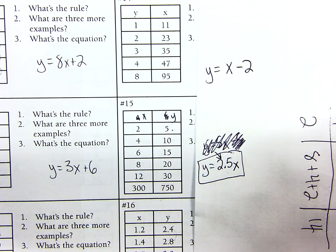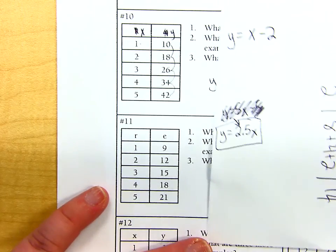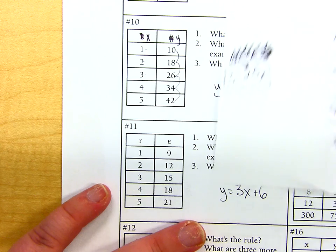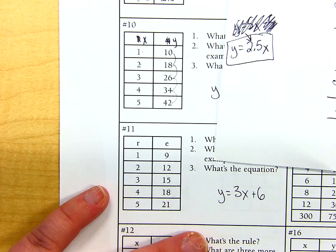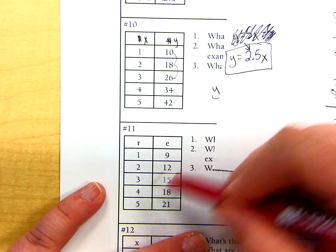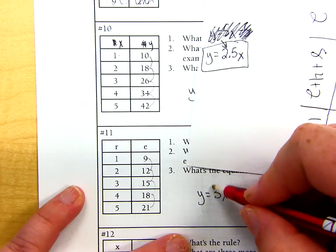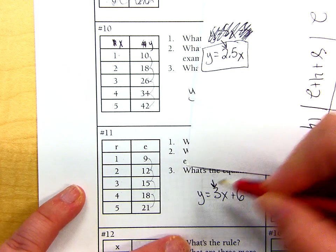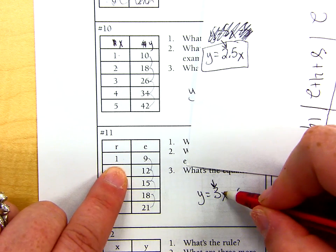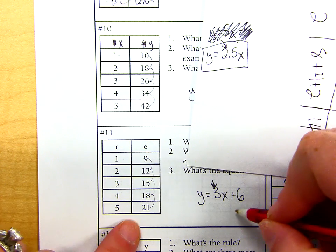We might as well go over the remaining ones. How about 11? Did you guys get 11? Did you get 3X plus 6? Yes. Okay, good. And this one's nice. It's going up by 1s. I notice I'm going up by 3s here. So I'm going to put a 3 right there. And then 3 times 1 is 3, so I've got to add 6. And then you just check. Yep, it holds true for all the other ones.